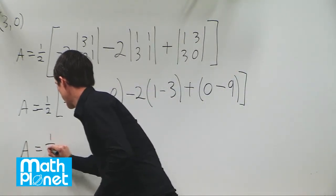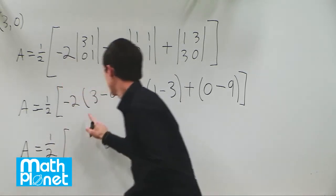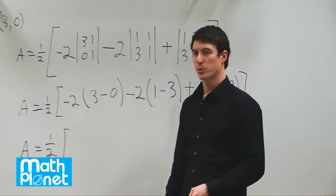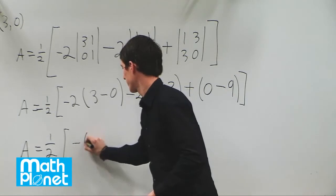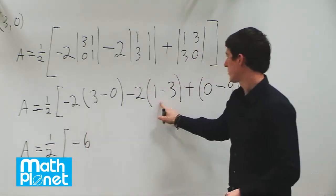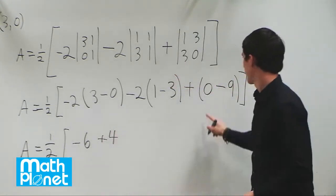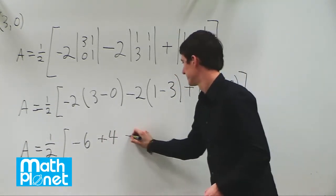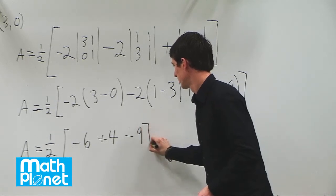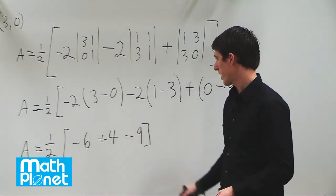So now we have the area as 1 half times what we have left here. So 3 minus 0 is just 3, times negative 2 is negative 6. Here we have negative 2 times negative 2, which is positive 4. And here we have just negative 9.